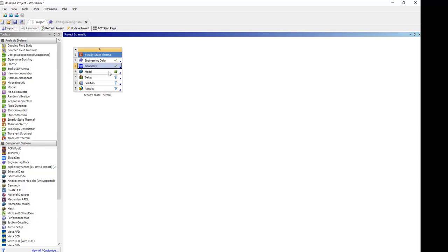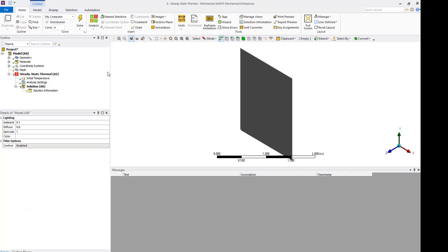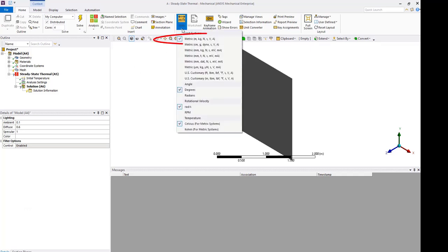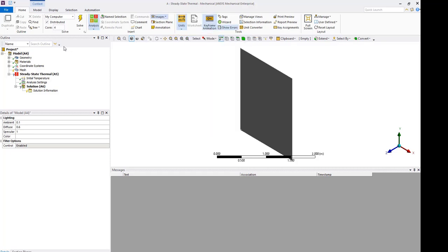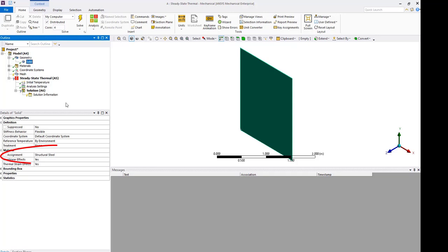Open mechanical. Check units and make sure they are meter, kilogram, newton. Under geometry, assign glass material.